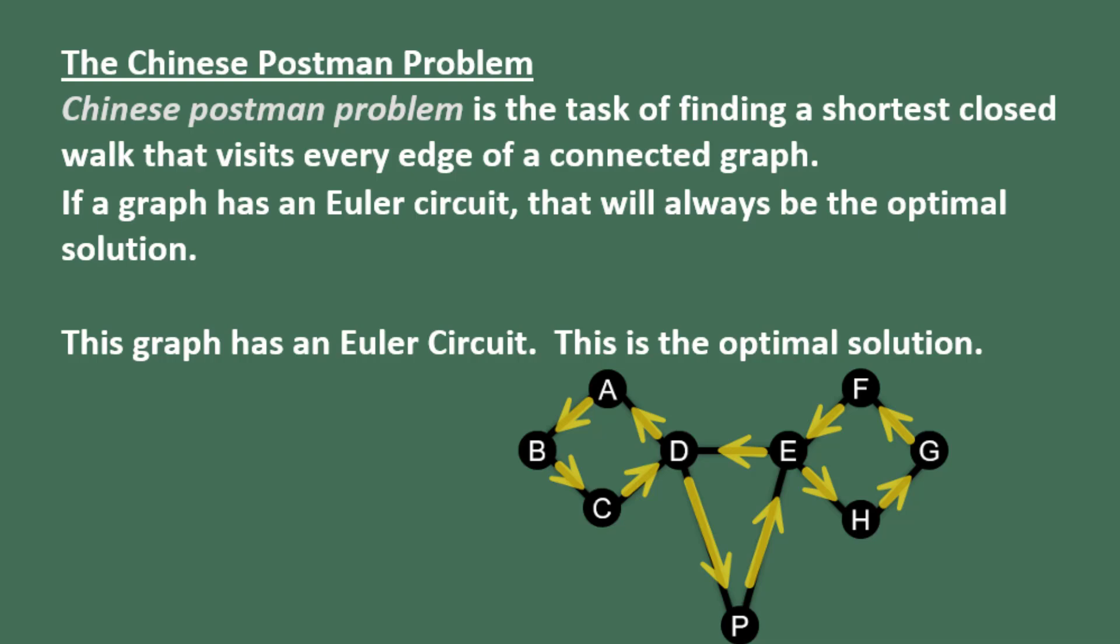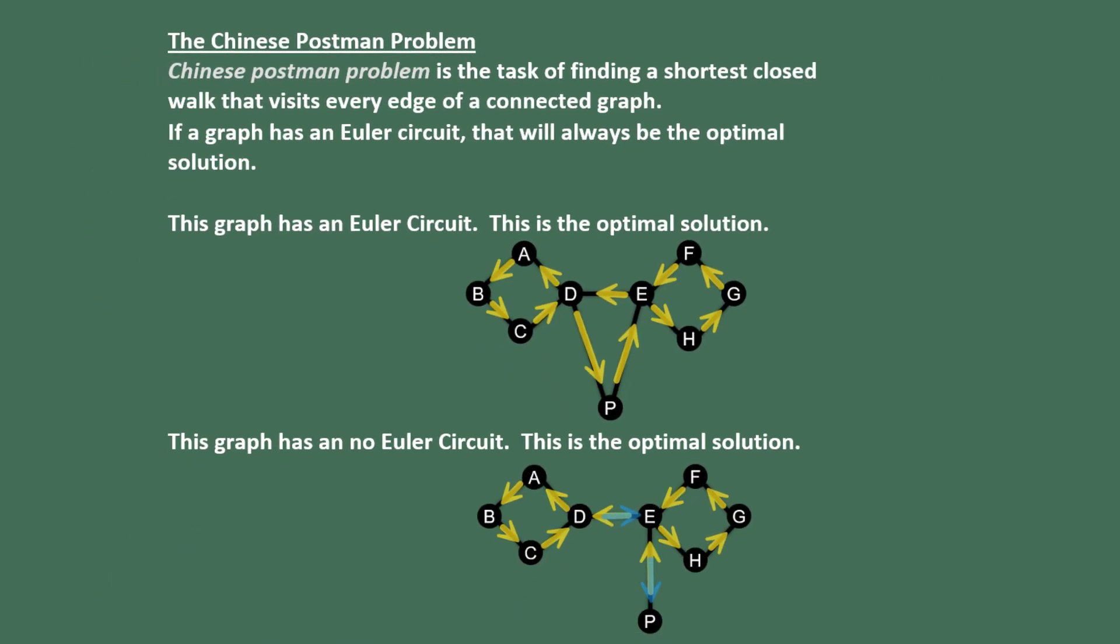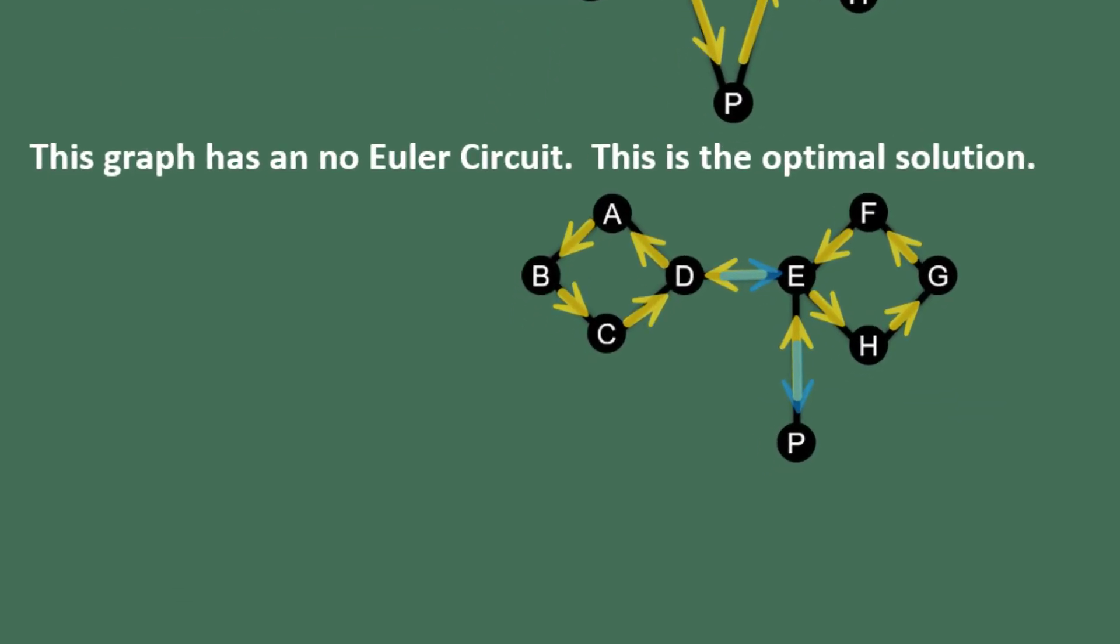The graph we just saw has an optimal solution that is an Euler circuit. However, it's also possible to have a graph that doesn't have an Euler circuit. In the graph shown here, which shows the closed walk from the first example, the optimal solution turned out to be to cover two edges twice. That was the best we could do.